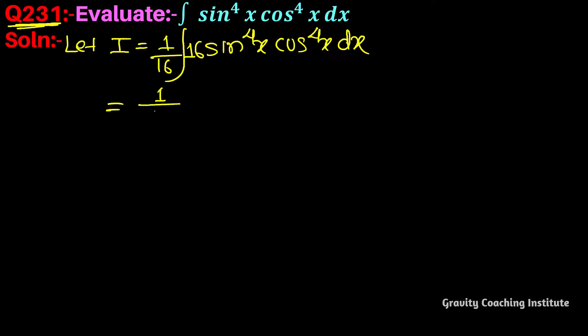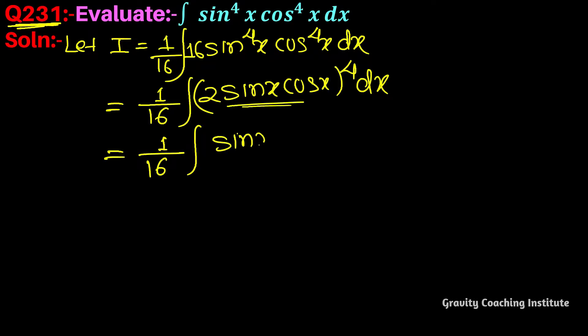Equal to 1 by 16 into integration 2 sin x into cos x whole power 4, equal to 1 upon 16 into integration. Here the sine 2x formula, equal to 1 by 16 into integration sine square 2x whole square dx.